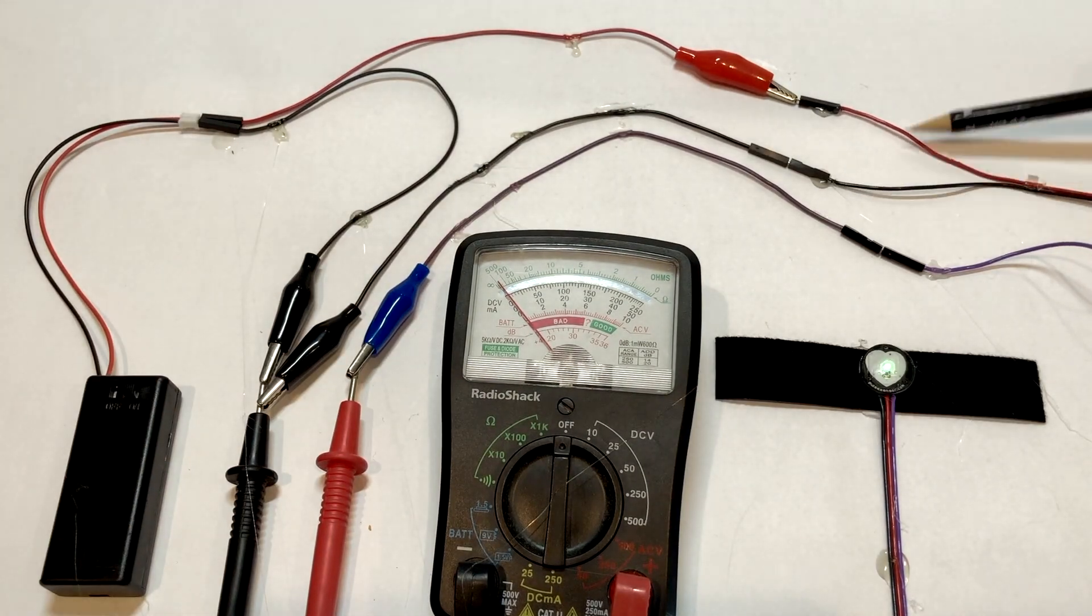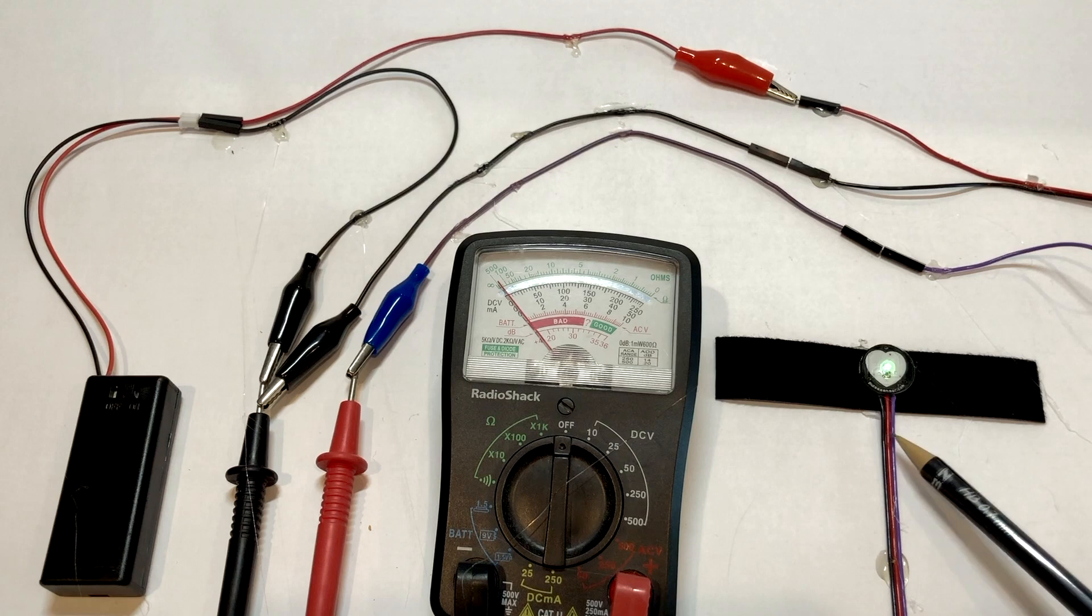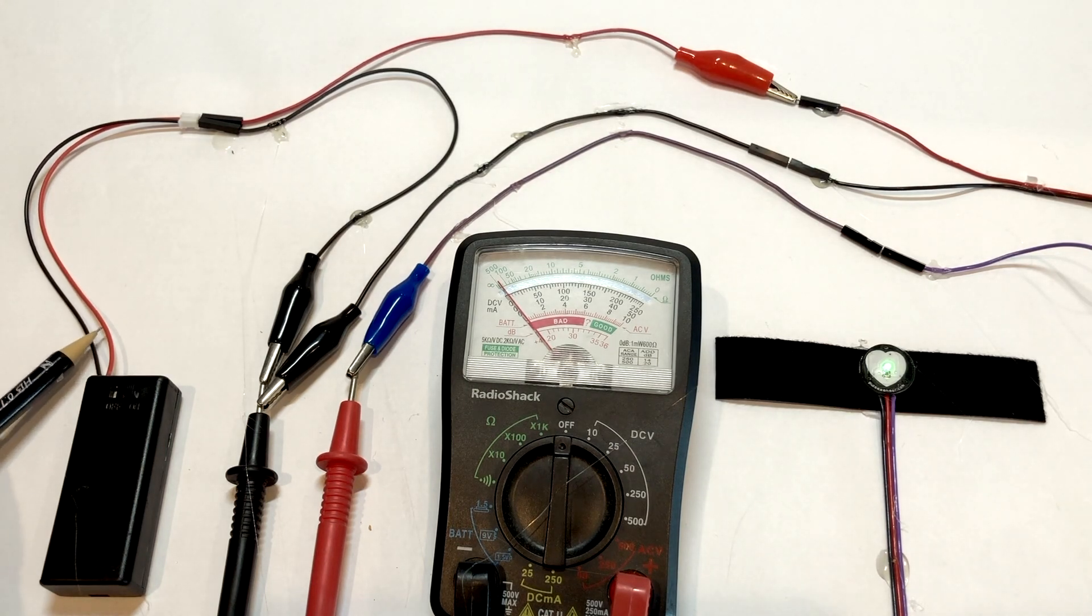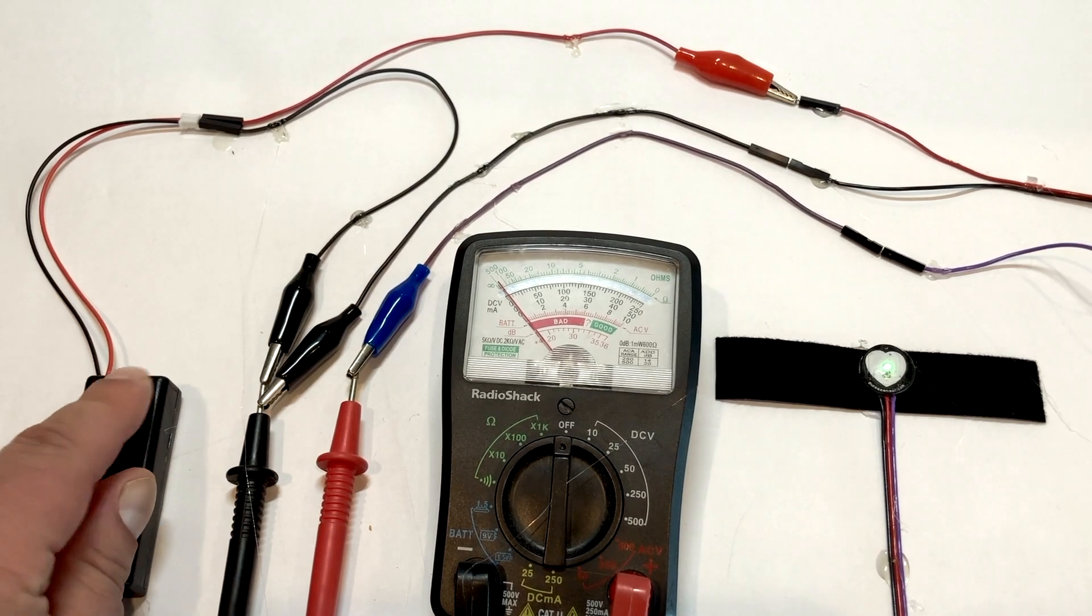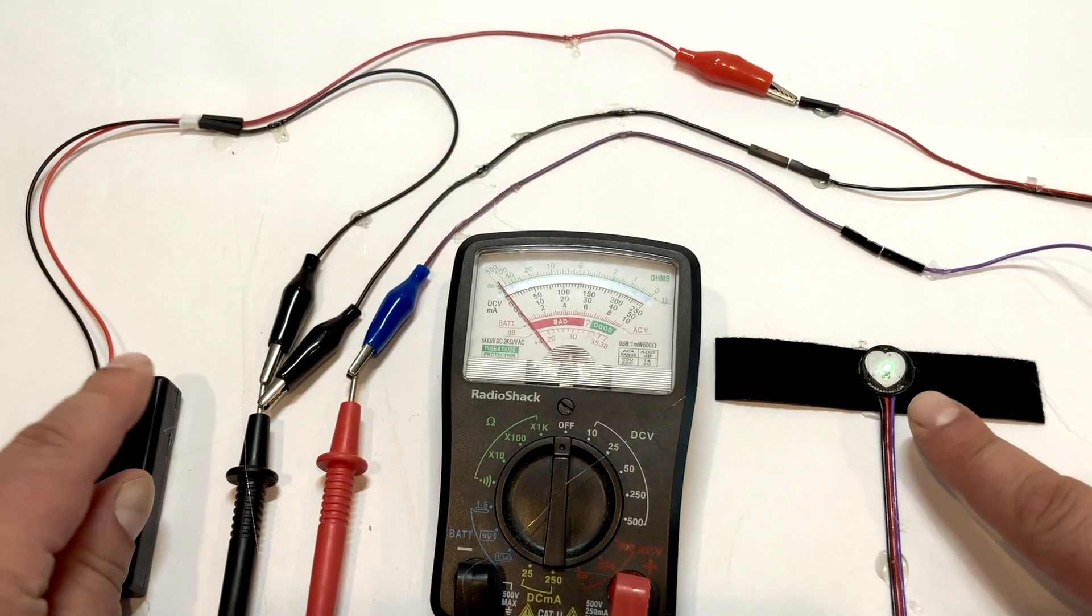Hook up the Pulse Sensor black and red cables, its ground and power, to the black and red ground and power cables on the battery pack. That's enough to power on and power off the device.